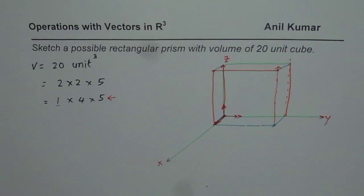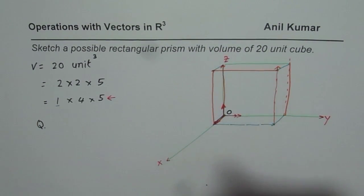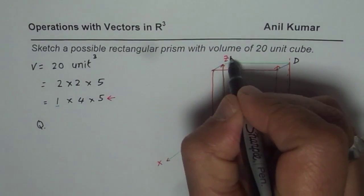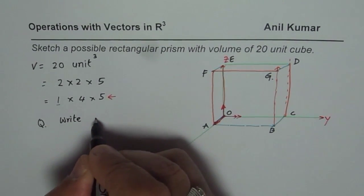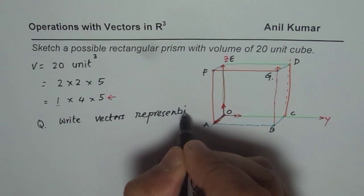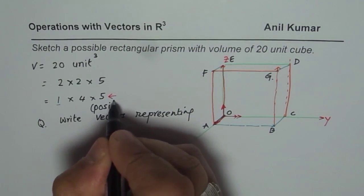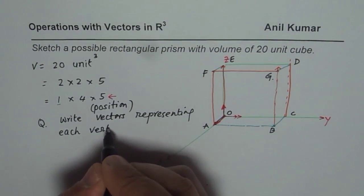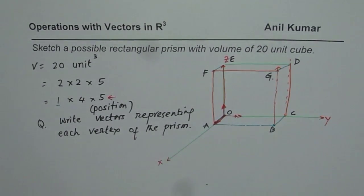Now let me label the vertices. Let's say the points are A, B, C, D, E, F, and G. Your question is: write vectors representing each vertex of the prism. That is a test question for you.